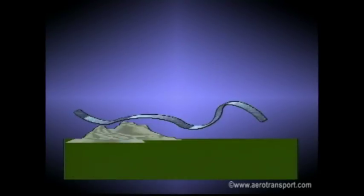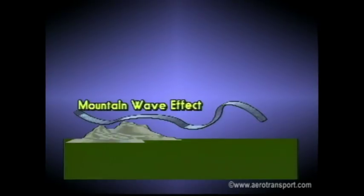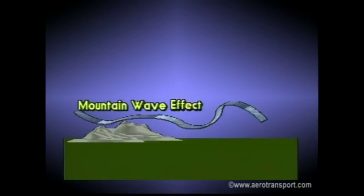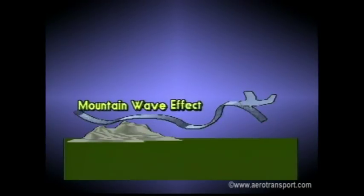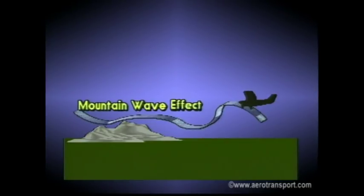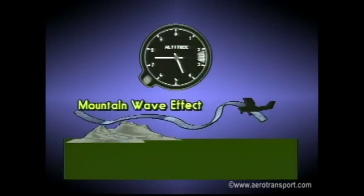Winds blowing over a mountain range can create a phenomenon known as mountain wave. This effect can extend as far as 100 miles downwind of the range and at altitudes above the actual elevation of the mountains. Generally, mountain waves cause turbulence, but sometimes they may be very smooth. As a result, you can find yourself in a downdraft with no warning. The altimeter will show no decrease in height until it reaches an altitude level equal to the level caused by the mountain wave.